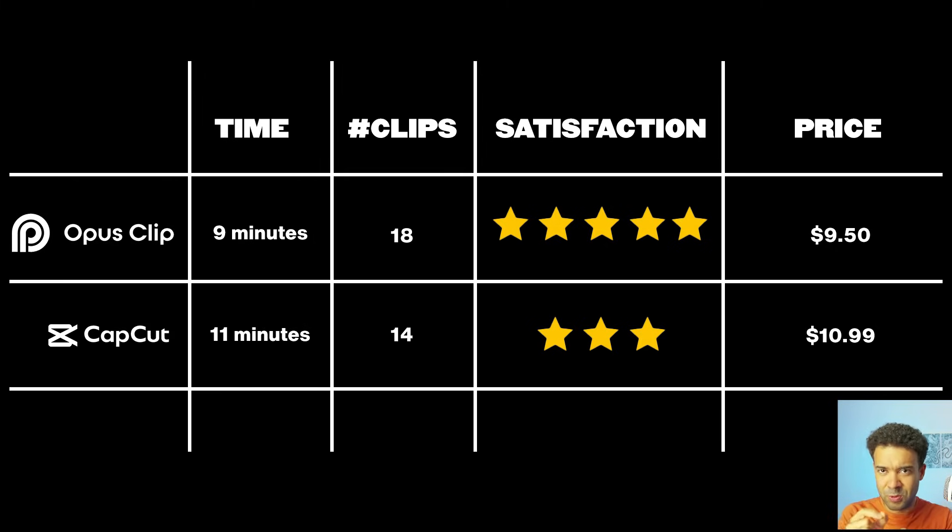If you're looking to do a ton of other video stuff — converting text to speech, removing backgrounds from people in videos, scaling video to 4K, all of those cool features — CapCut is probably the tool for you. But if you're just looking for an AI to turn your long form videos into YouTube shorts that doesn't focus on anything else and aims to perfect that one feature, Opus Clip, in my opinion, is the way to go.